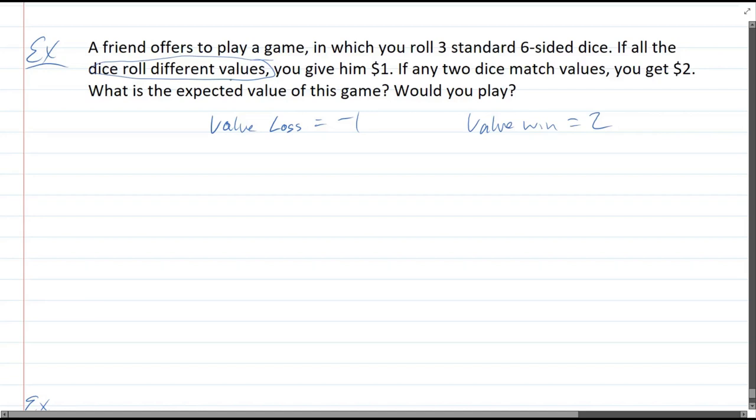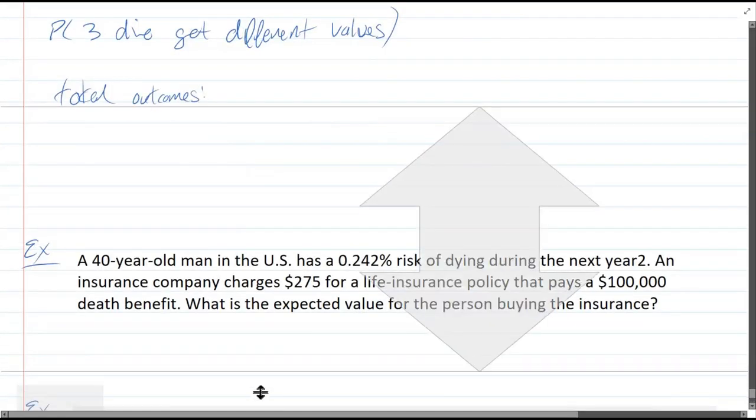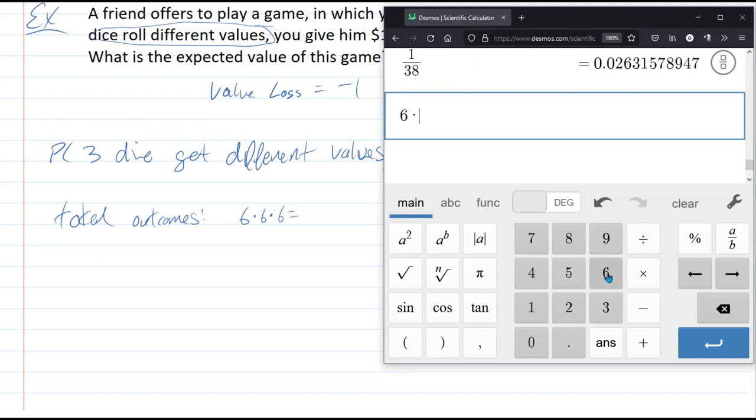Probability that the three die get different values. Okay. So, there's a few ways to think about this. So, let's think of the total outcomes. We definitely need more space here. All right. Total outcomes. Three. So, we're rolling six times six times six, which is a big number. Six times six times six. 216.